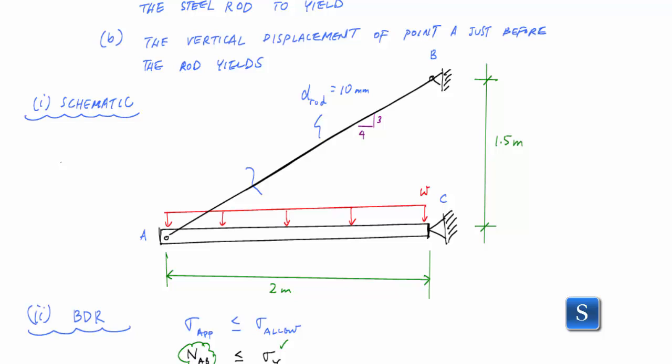All right, so now part two of this problem asks for the vertical displacement of point A just before the rod yields. So how far down does point A go at the instant before the rod yields? Let's take a look at the instant where the rod does yield.